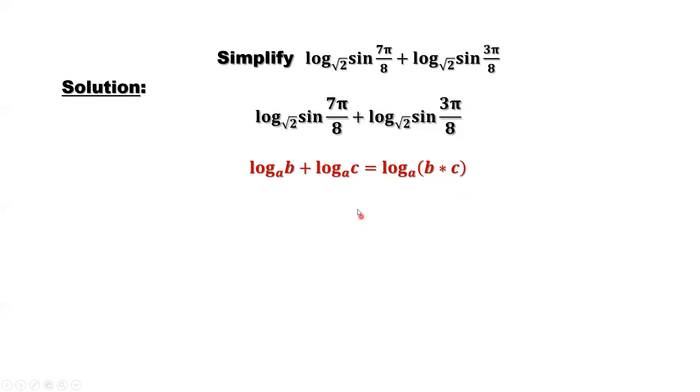So here in our case, what is a? a is the square root of 2. This formula only for the same base log functions. So what is b here? b is 7π over 8. What is c? 3π over 8. We can put that sum of two logs into one log. Log of sine 7π over 8 times sine 3π over 8.